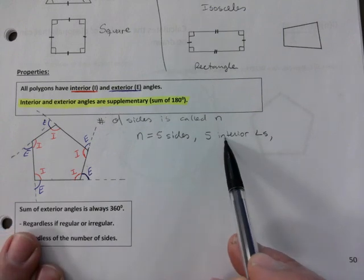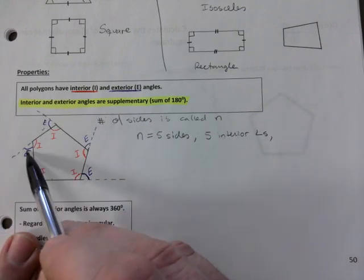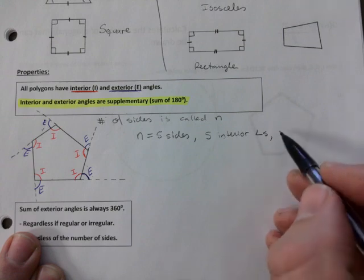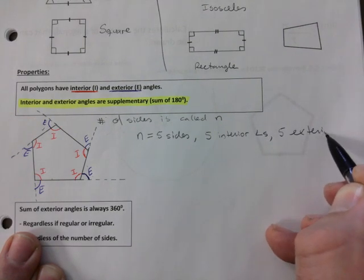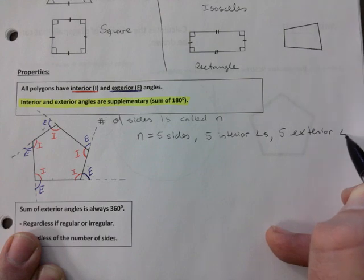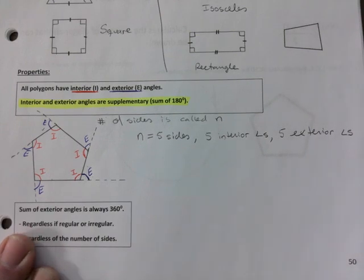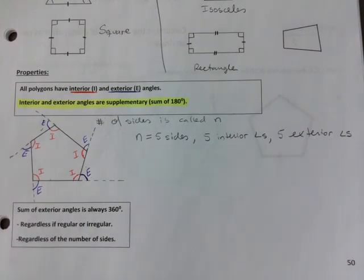So five sides, five interior angles, and watch one, two, three, four, five exterior angles. That is always going to be the case for polygons. That the number of sides coincides with the number of interior angles and also with the number of exterior angles.